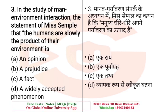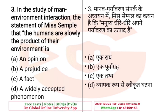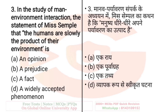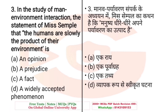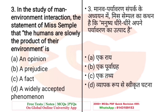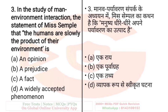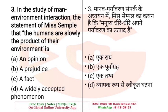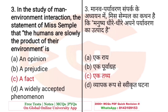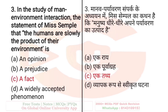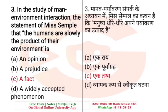Question: In the study of man-environment interaction, what is a widely accepted phenomenon called? The right answer is: A fact — it is called a fact, i.e., a widely accepted phenomenon.